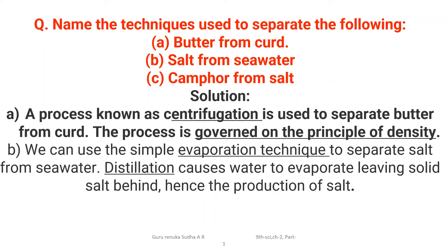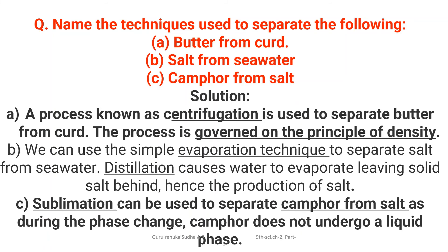Salt from sea water is separated using a simple evaporation technique. Distillation causes water to evaporate, leaving solid salt behind, allowing salt production to take place. Camphor from salt is separated by sublimation. Sublimation is used because camphor does not undergo a liquid phase during its phase change, going directly from solid to gas. Therefore, sublimation effectively separates camphor from salt.